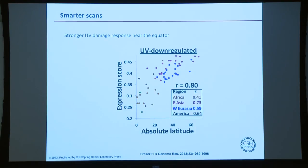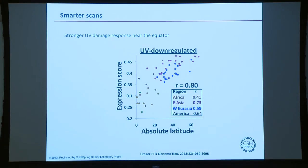He got some nice results. The strongest result was showing that genes responding to UV damage and skin damage are more expressed near the equator — you are genetically more prone to express these genes when near the equator, and they are down-regulated further away. Different colors represent different populations. UV damage response is genetically controlled, and the degree of it is the result of selection. Joel Hirschhorn did something similar looking at selection for height in Europe, showing that alleles tending towards taller stature are more common in Northern Europe than Southern Europe — suggestive that there was selection for greater height in Northern Europe.